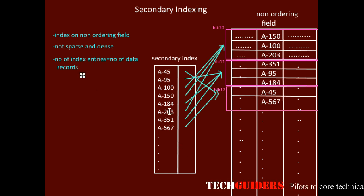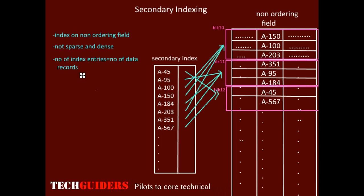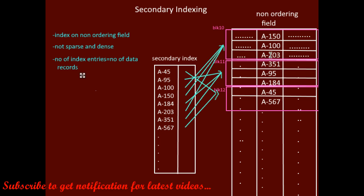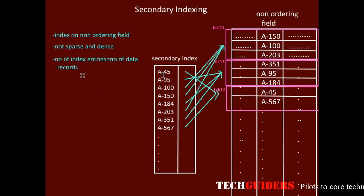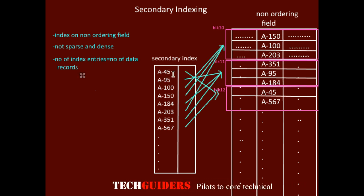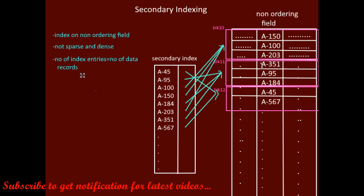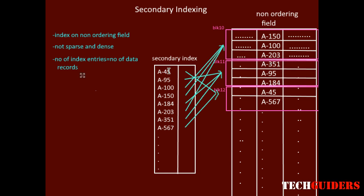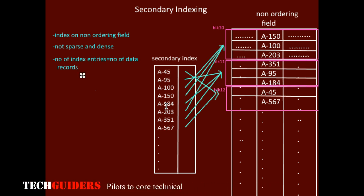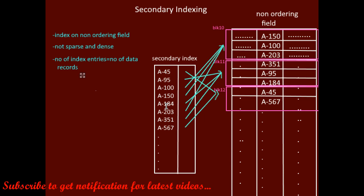In the absence of a secondary index, for queries based on the non-ordering field the only option is a linear search since the file is unordered. But with a secondary index, the size of each index entry is small, so overall the secondary index is smaller than the data file. The secondary index is ordered based on the index search key, so we can perform a binary search on it, reducing the number of block accesses required.